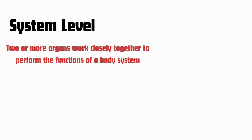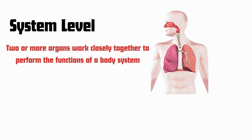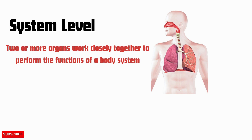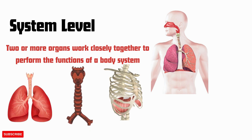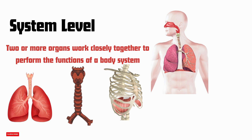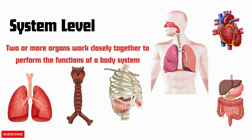The next level of the body is the system level. Two or more organs work closely together to perform the functions of a body system. For example, the human respiratory system includes the lungs, trachea, and diaphragm working together to facilitate breathing and oxygen exchange. Other organ systems include the cardiovascular and digestive systems.